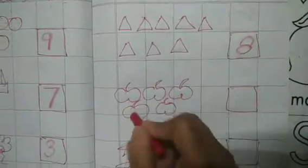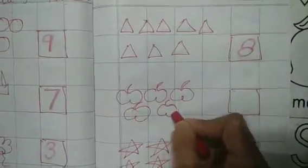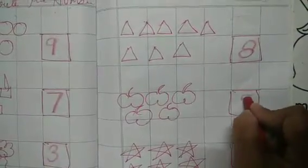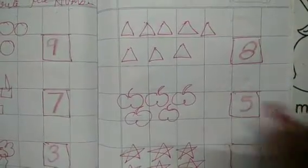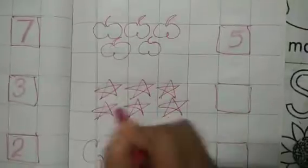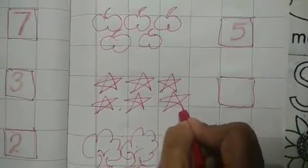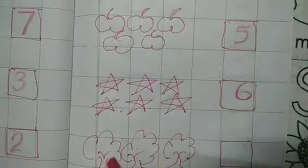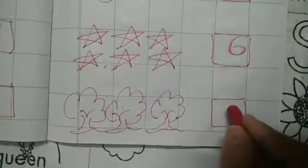1, 2, 3, 4, 5. Here, 5 apples. Right here, number 5. 1, 2, 3, 4, 5, 6. Six stars. Right here, number 6. 1, 2, 3, 4, 5, 6. Right here, number 3.